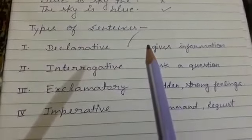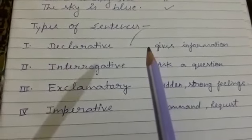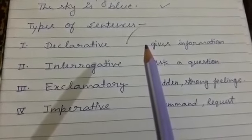These sentences always end with a full stop. They can be of two types: the first one, positive declarative sentences, and the second one, negative declarative sentences.